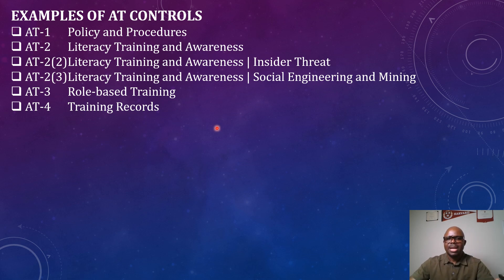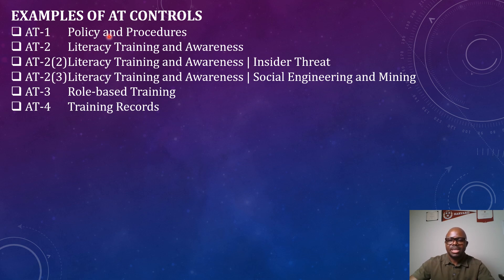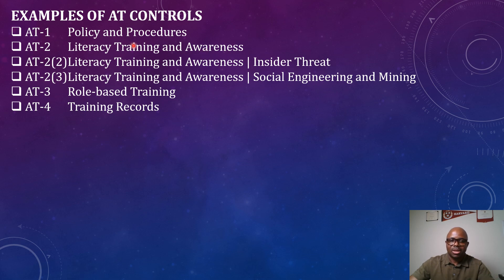There are six controls in total under the AT control family. AT-1 covers policies and procedures — what should be inside the AT controls, who should carry out those policies, who should sign them, and how often they should be updated. AT-2 is Literacy Training and Awareness — recently renamed from Security Awareness Training — covering the instances when an organization should train their employees.